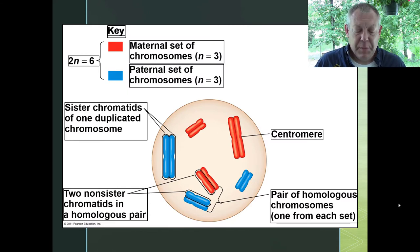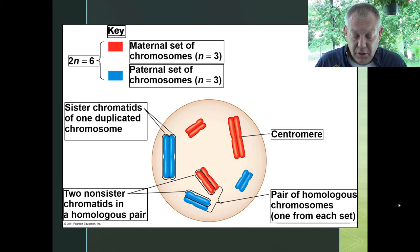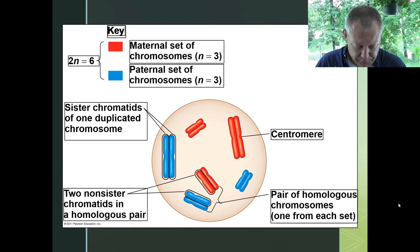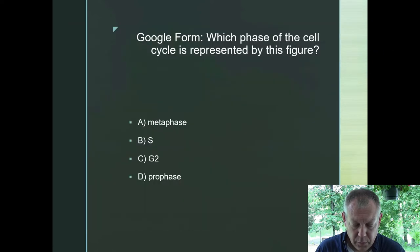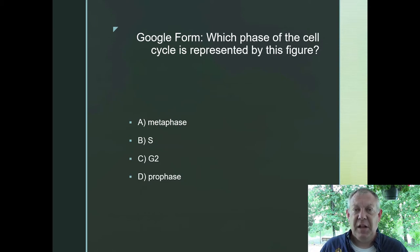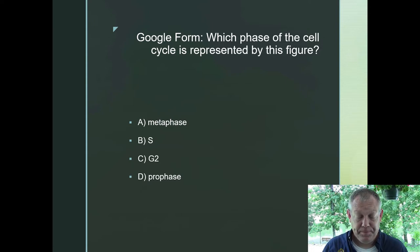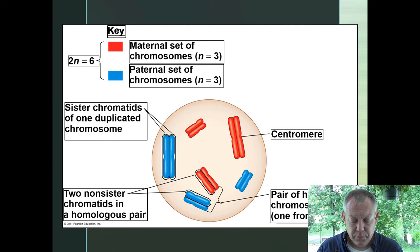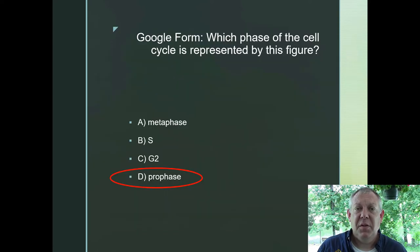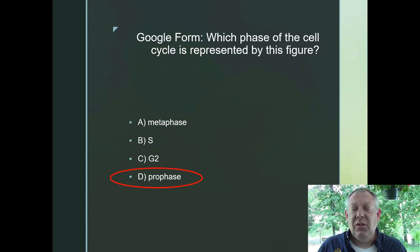Here's a simplified example of an organism whose diploid number is 6. In one cell of this organism you've got 6 chromosomes arranged in 3 pairs. What phase of the cell cycle is represented by this figure — metaphase, S, G2, or prophase? Your chromosomes are condensed but not lined up at the equator, so it wouldn't be metaphase. S and G2 are both in interphase where you can't see the chromosomes, so it's got to be prophase.